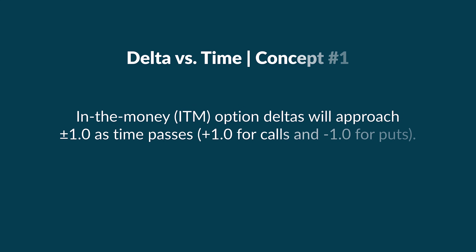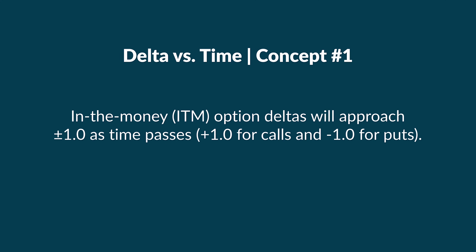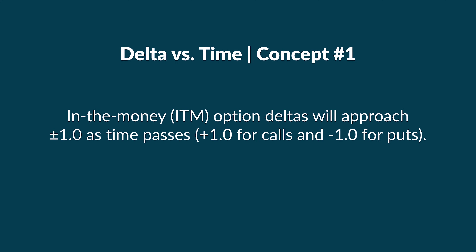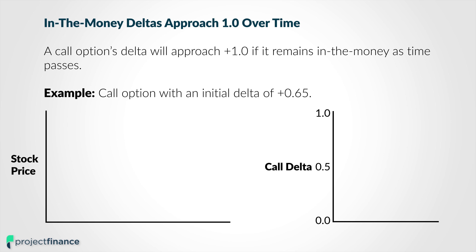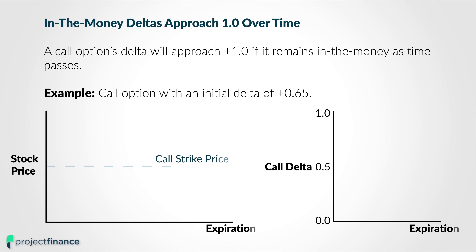On this channel I like to explain things in depth, so that's what we're going to do. The first concept is that an in-the-money option will see its delta approach positive or negative 1.0 as time passes, assuming the option remains in the money. For example, if you buy a call option with a delta of 0.65 and that option is in the money — meaning the stock price is above the call option strike price — then as time passes, if this call option has 30 days to expiration when we buy it, over the course of the next 30 days that 0.65 delta call option is going to become a 1.0 delta call option.